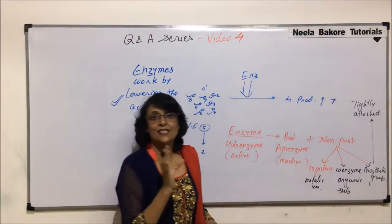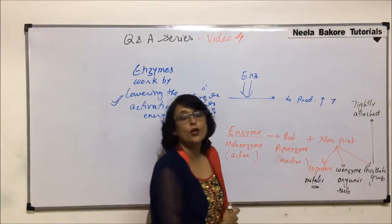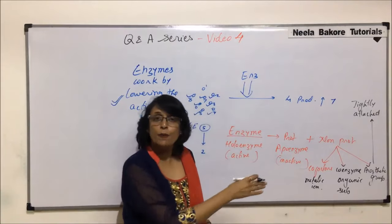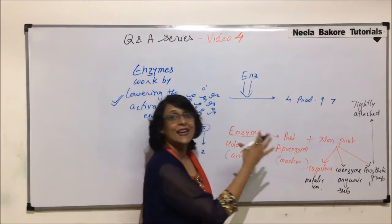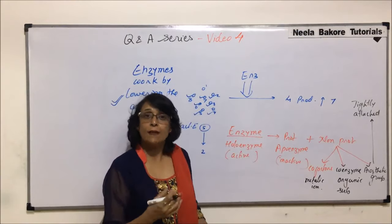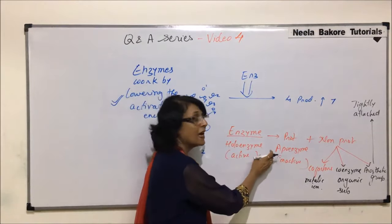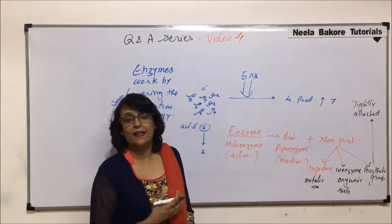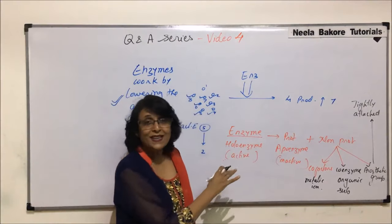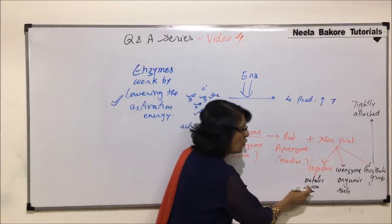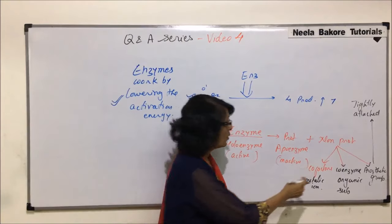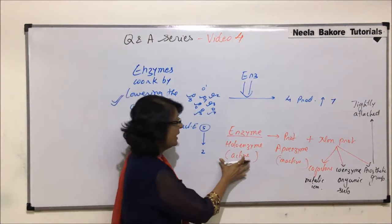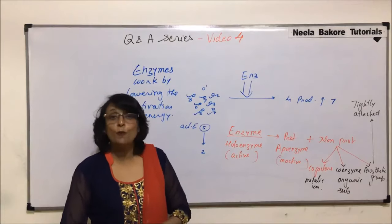The third category is the prosthetic group, which can be either a metallic ion or an organic compound, but is permanently and tightly attached to the apoenzyme. Enzymes with prosthetic groups are always active. In contrast, with cofactors and coenzymes, the apoenzyme is separate and the non-protein part temporarily binds at the time of reaction to form a functional enzyme.